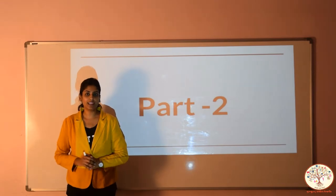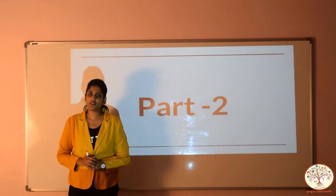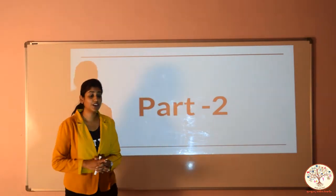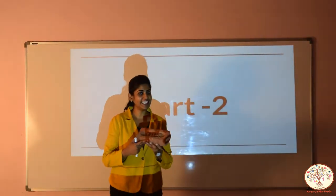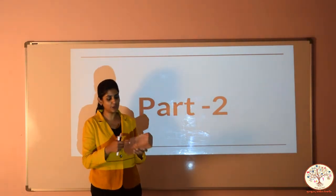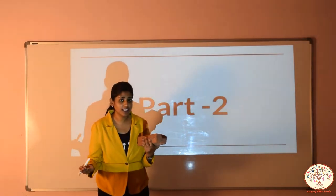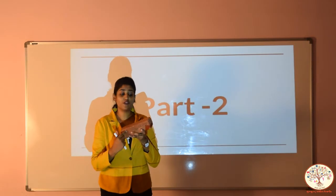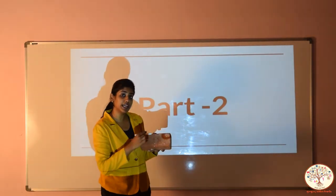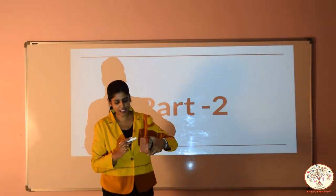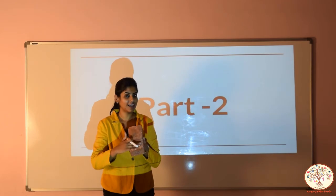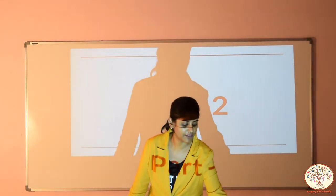Hello kids, welcome back to your maths class. In your previous video we have discussed about some shapes, and we talked about brick. Do you remember? How many faces are there in a brick? 6 faces. 1, 2, 3, 4, 5 and 6. How many corners? 8 corners, and what about the edges? 12 edges. And what is the shape of the face of a brick? A rectangle. Here also a rectangle. This is the smallest face and this is the largest face. So we have discussed all these things in our previous video.